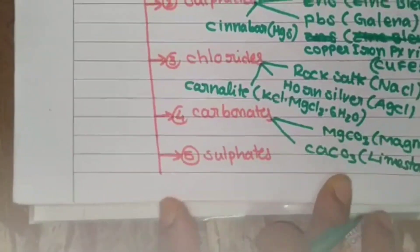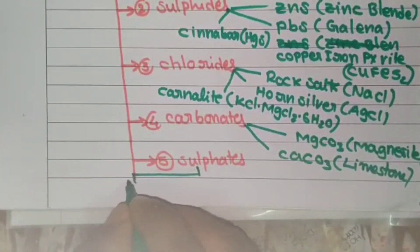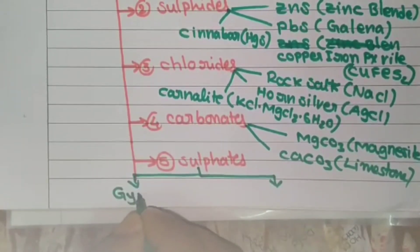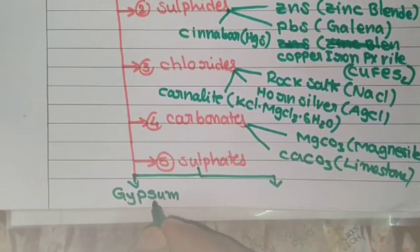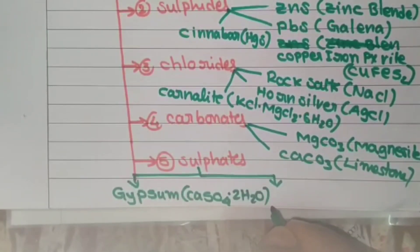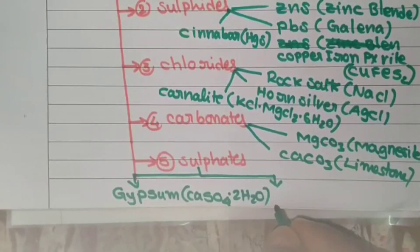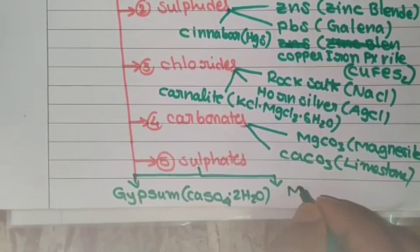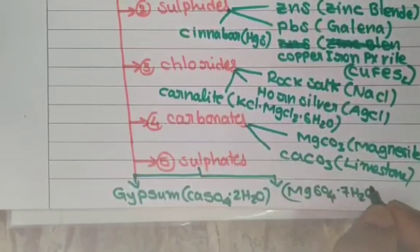Finally, the sulfates group — there are only two. The first is gypsum salt, with the formula CaSO4·2H2O. The second important one is Epsom salt, with the formula MgSO4·7H2O.